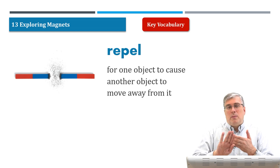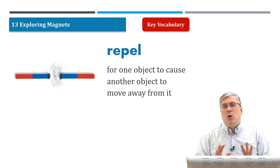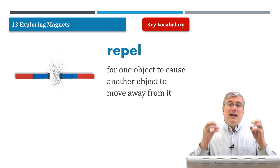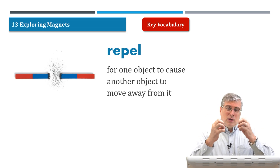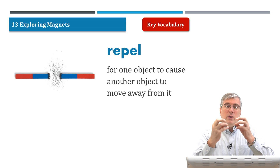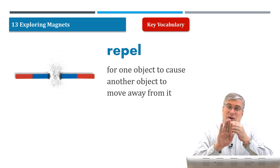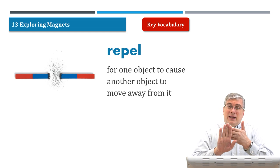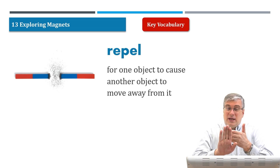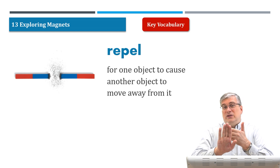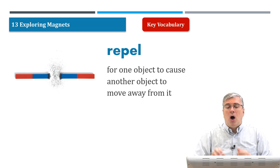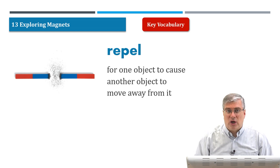Attraction and repel are both types of forces. Attraction will pull another thing towards it with a certain force. And with repel, there is also some force that is acting on the two objects to separate them, to make them move away from each other.